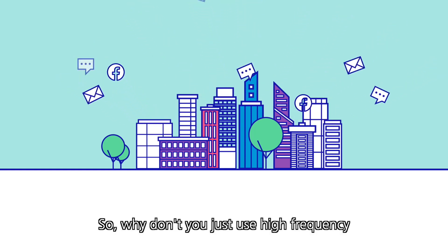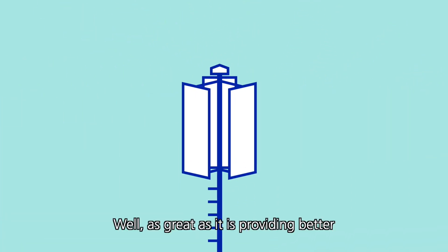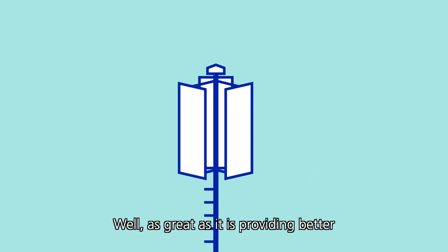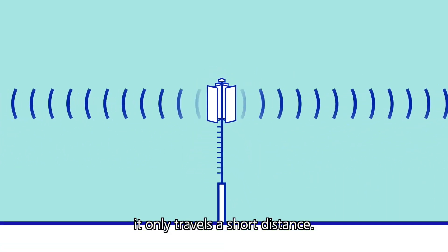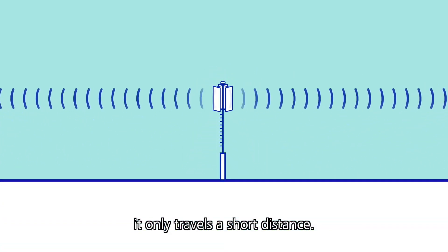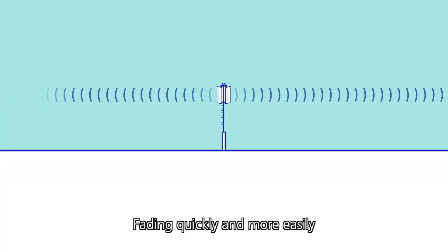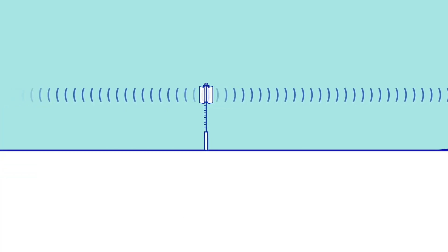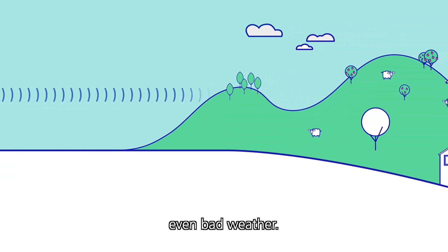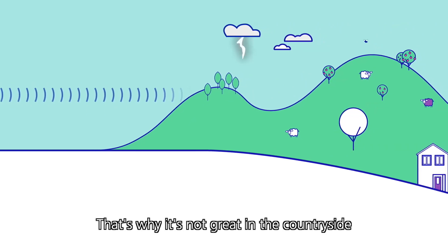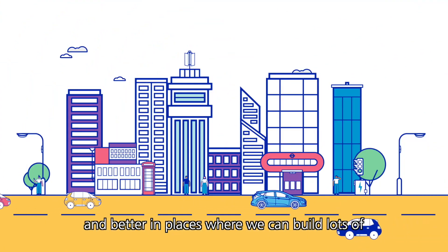So why don't you just use high frequency spectrum everywhere? Well, as great as it is at providing better signal to more people, it only travels a short distance, fading quickly and more easily blocked by things like buildings, trees, and even bad weather.